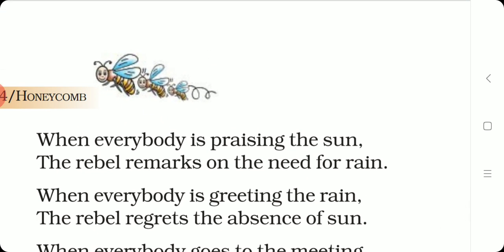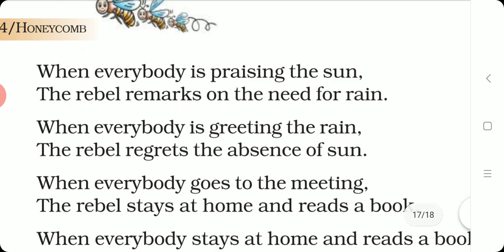When everybody is praising the sun, the rebel remarks on the need for rain. So, when everybody is saying yes, it's very nice that the sun has finally come out, the rebel will say no, we need rain — opposite. When everybody is greeting the rain, the rebel regrets the absence of sun. When everybody is very happy that rain has come, the rebel will say, oh, it's so sad that there is no sun.